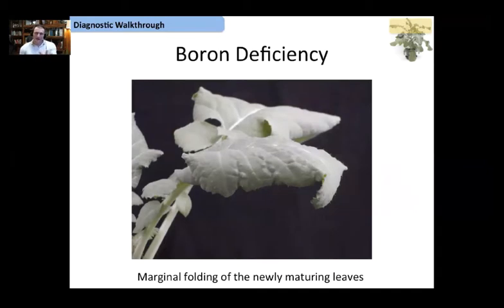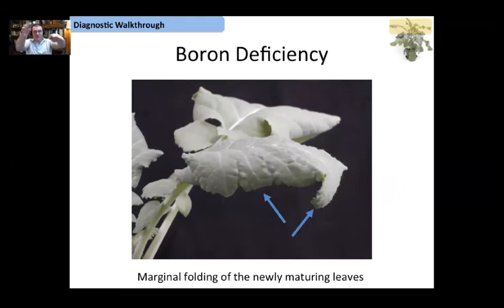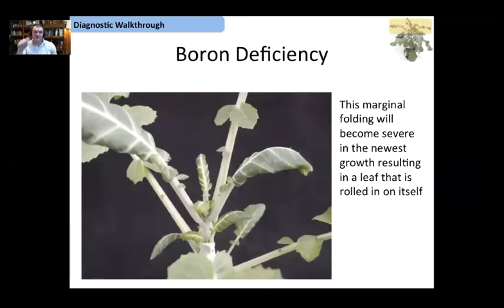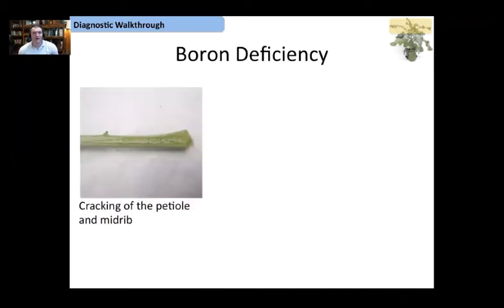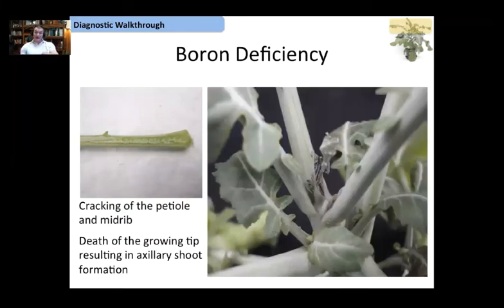Boron deficiency, a lot like calcium, is going to have a distortion of the leaf. The difference is that boron is going to be a folding, whereas calcium is a cupping. The leaf margin folds in and downward on itself rather than cupping underneath. As this continues, the leaf rolls in on itself, almost like rolling up a piece of paper. Another sign of boron deficiency is cracking of the petiole or midrib — look at the cuticular surface for that cracking.